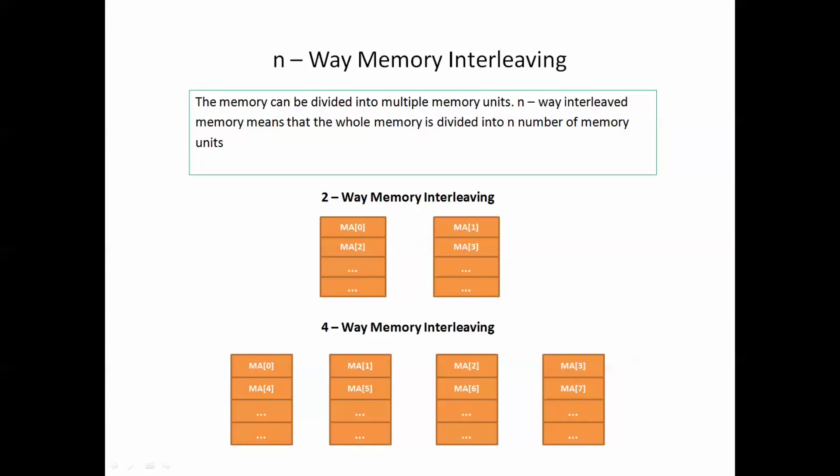The way of memory interleaving is determined by the number of memory units or banks in which the main memory gets divided. For example, the first figure shows two-way interleaving as memory is divided into two banks. The second one is a four-way memory interleaving in which the whole main memory is divided into four banks. Similarly, for n-way interleaving, the whole main memory will be divided into n banks.